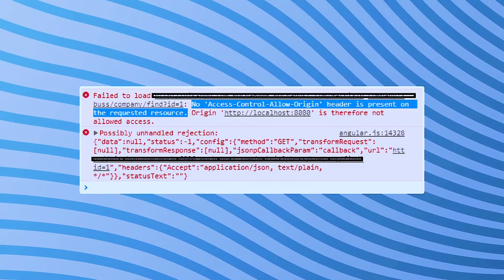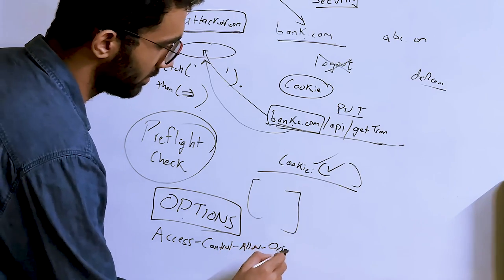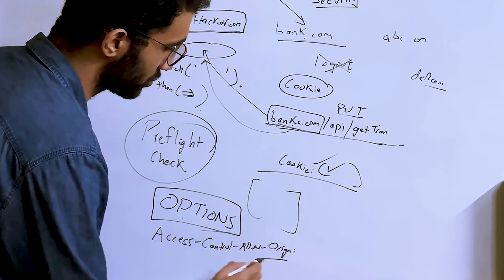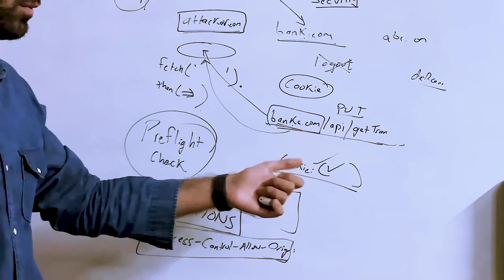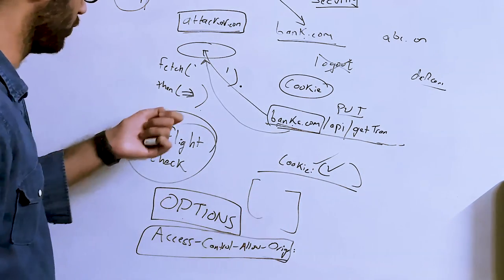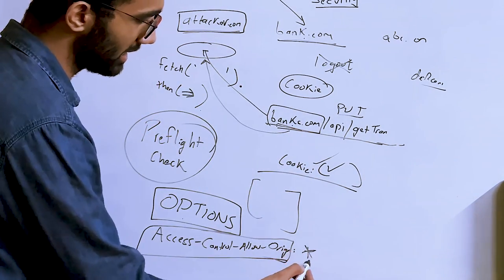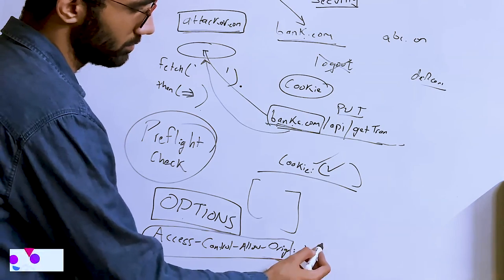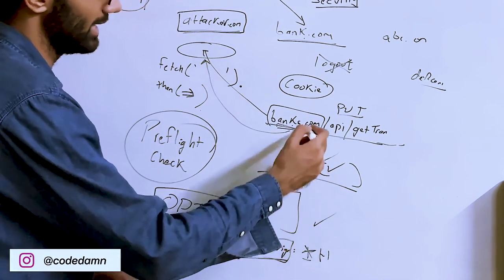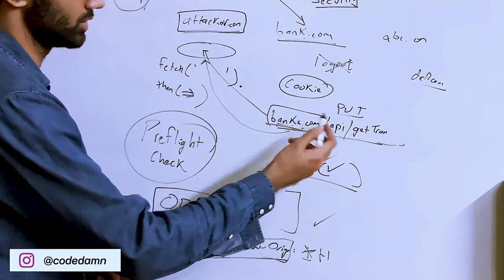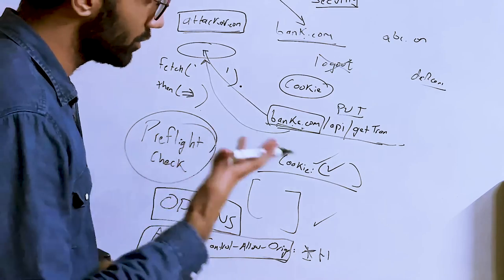You've probably heard of the header called `Access-Control-Allow-Origin`. This header instructs the browser whether the website performing the request should be allowed to access this resource. If it returns a wildcard `*` or the specific origin like `http://attacker.com`, the browser makes the actual request; otherwise, the browser blocks it.